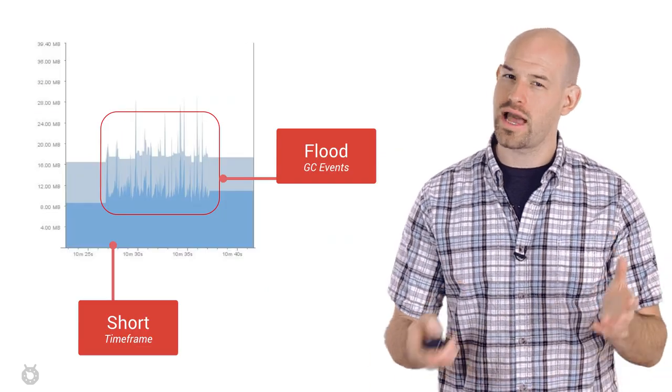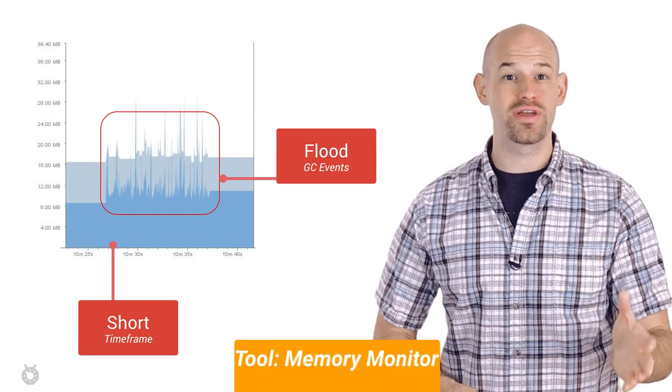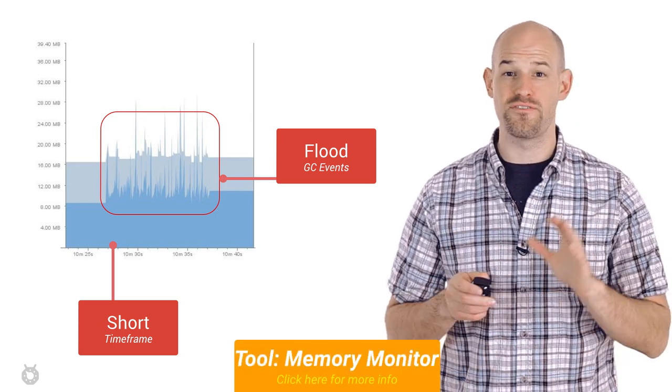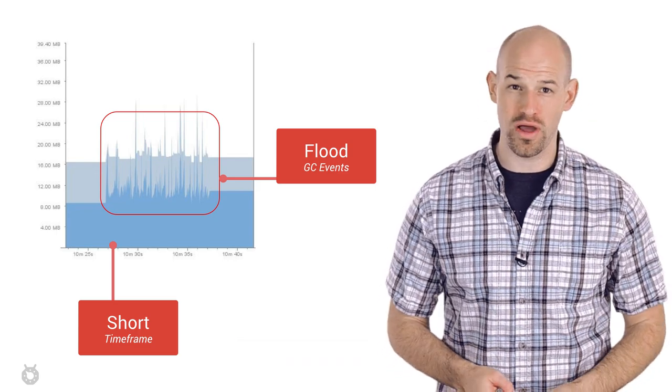Now, fixing these types of problems are actually pretty straightforward. To start, if you're noticing in the memory monitor that you're getting a flood of GC events in a very short time frame, then this points to a high chance that you've got a lot of memory churn going on here.